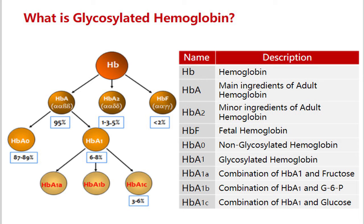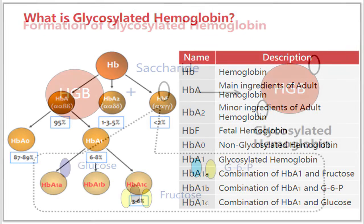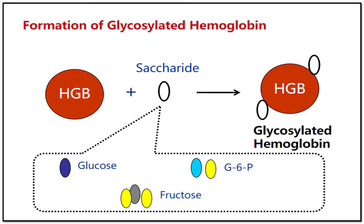In infants, the predominant hemoglobin type is HbF. Glycohemoglobin is formed when a ketoamine reaction occurs between glucose and the N-terminal amino acid of the beta chain of hemoglobin. The amount of glycohemoglobin generated is proportional to the mean blood glucose during the eight to ten weeks before the test.